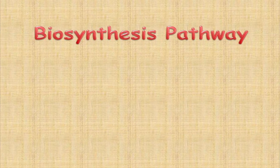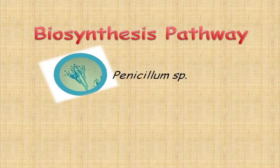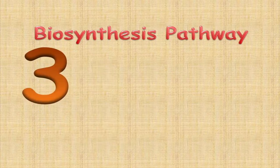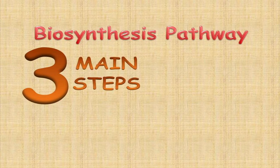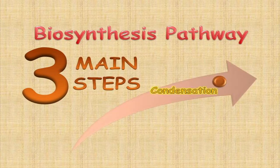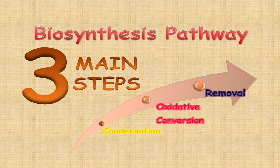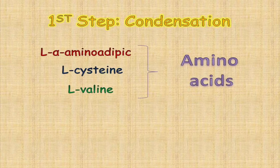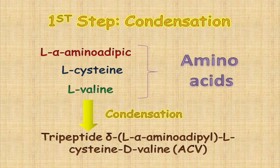Next is the biosynthesis pathway — the production of penicillin from penicillin fungus. There are three main steps in this pathway: condensation, oxidative conversion and removal. First, condensation of three amino acids: L-alpha aminoadipic acid, L-cysteine and L-valine are condensed into a tripeptide also known as ACV.